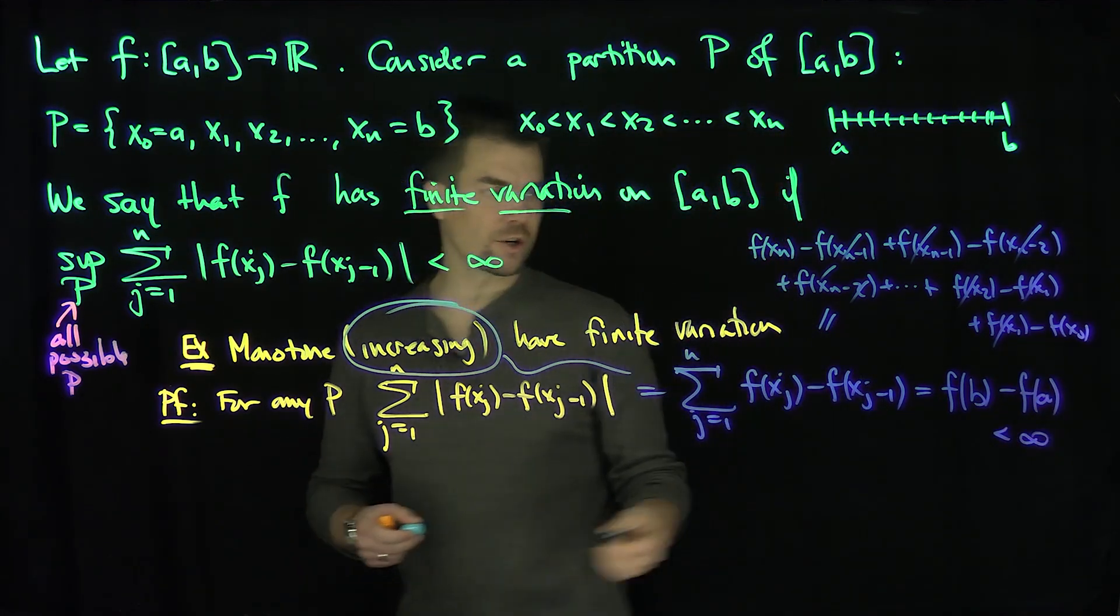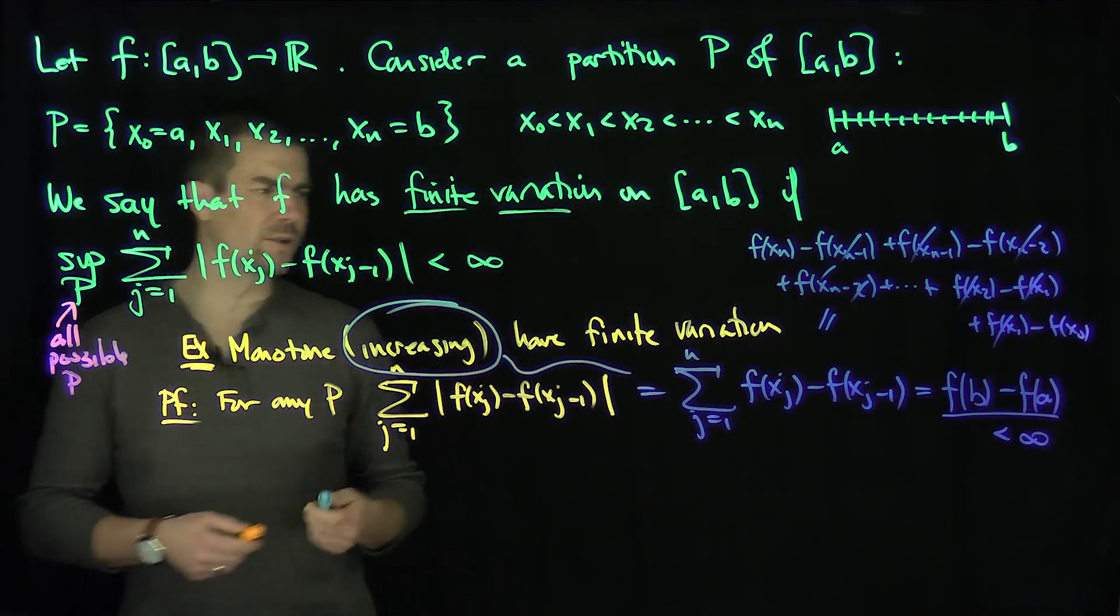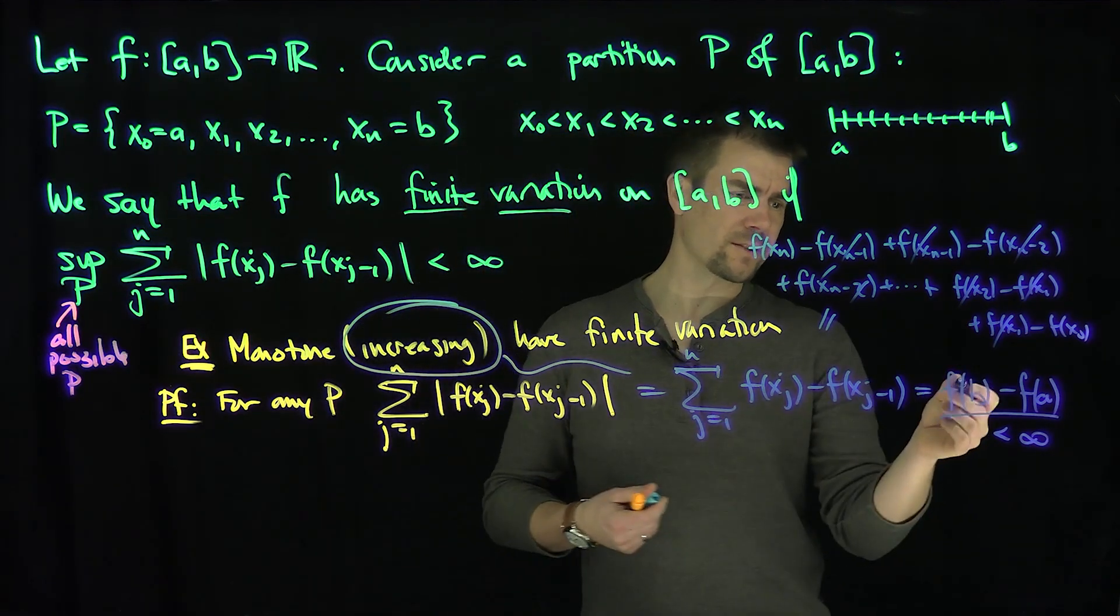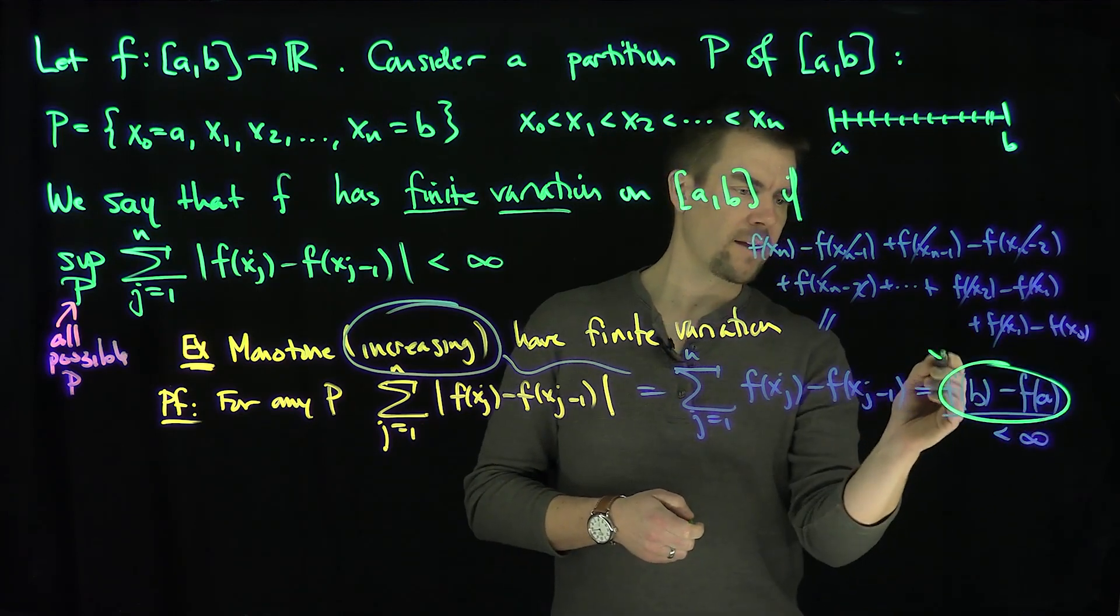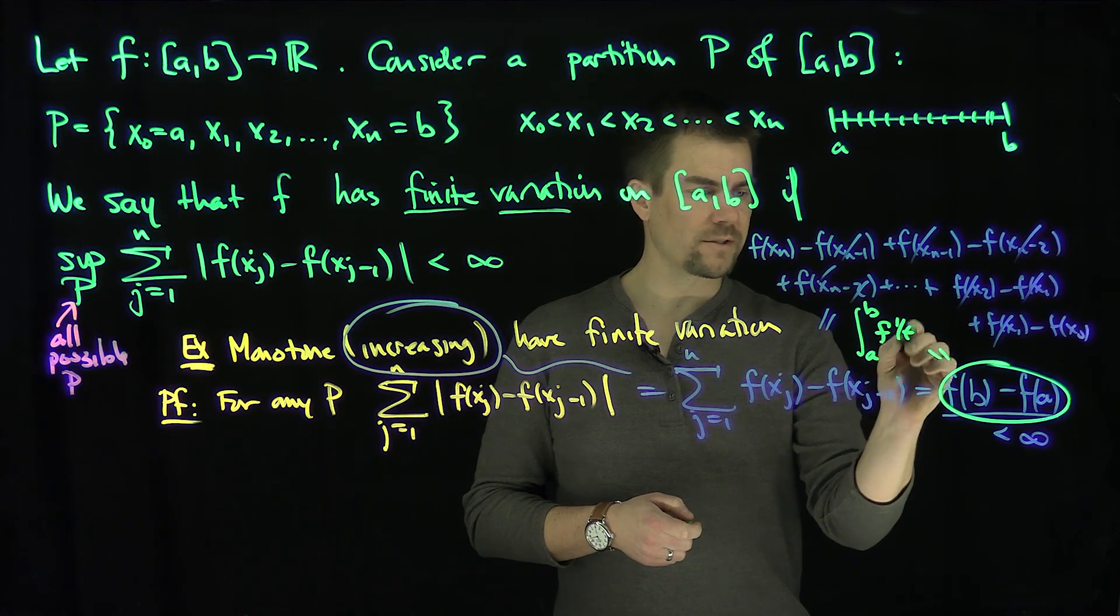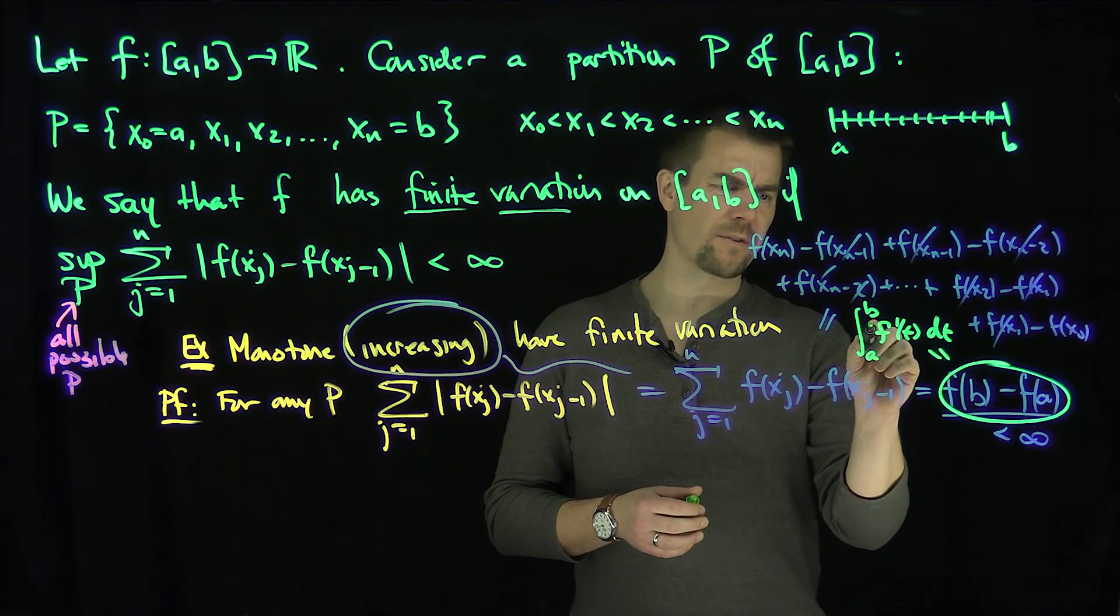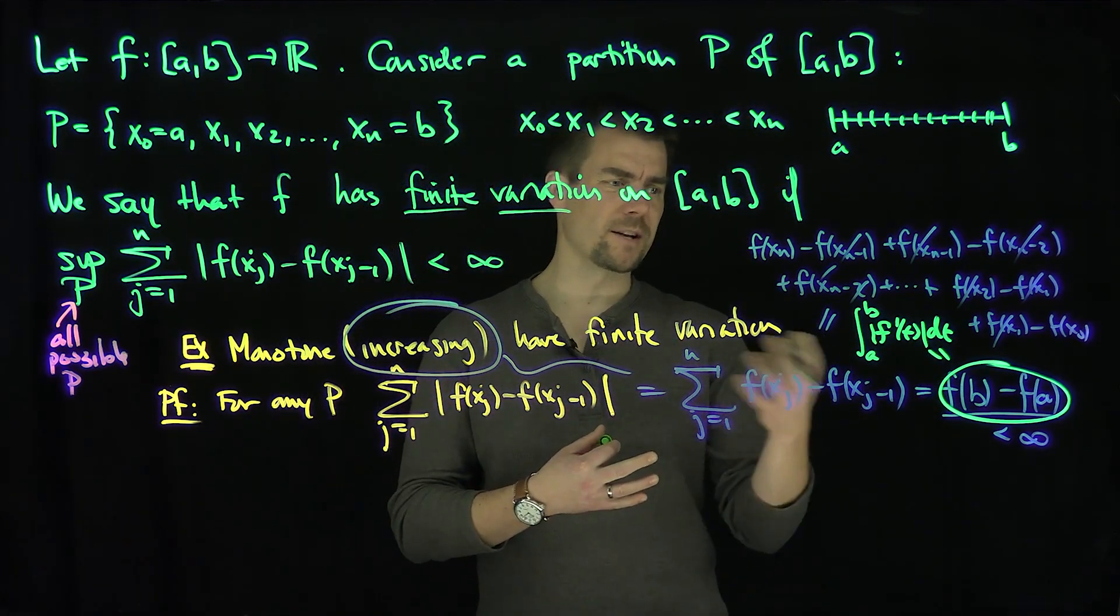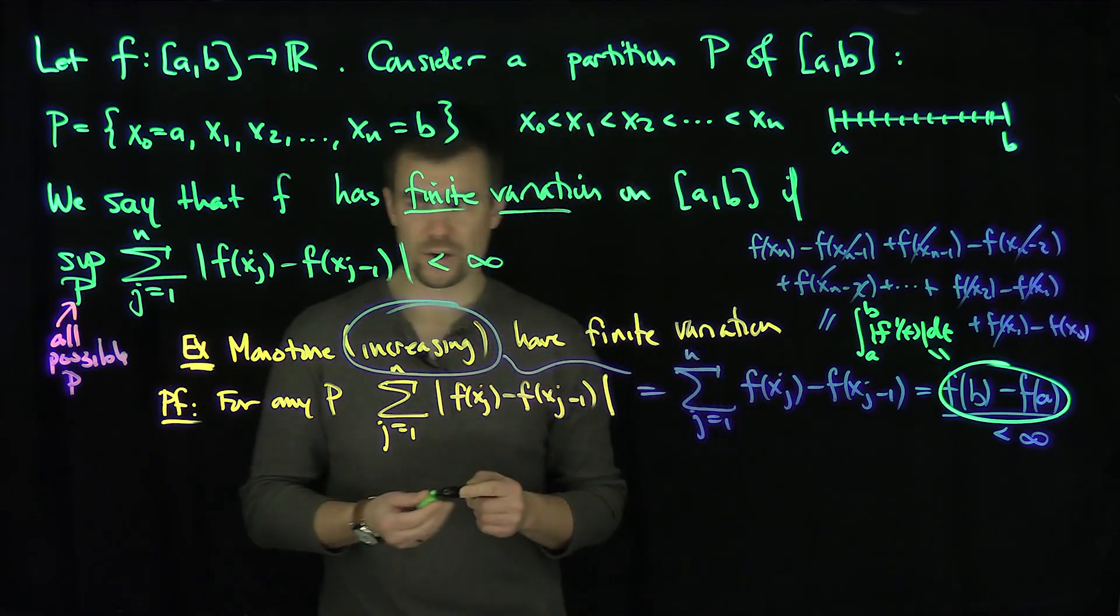Independent of the partition, this will always collapse to f(b) - f(a). This is interesting because this expression also equals the integral from a to b of f'(t) dt. Since f is increasing, I can drop the absolute value. So we get some rough sense that maybe there's an idea behind a derivative being involved in finite variation.